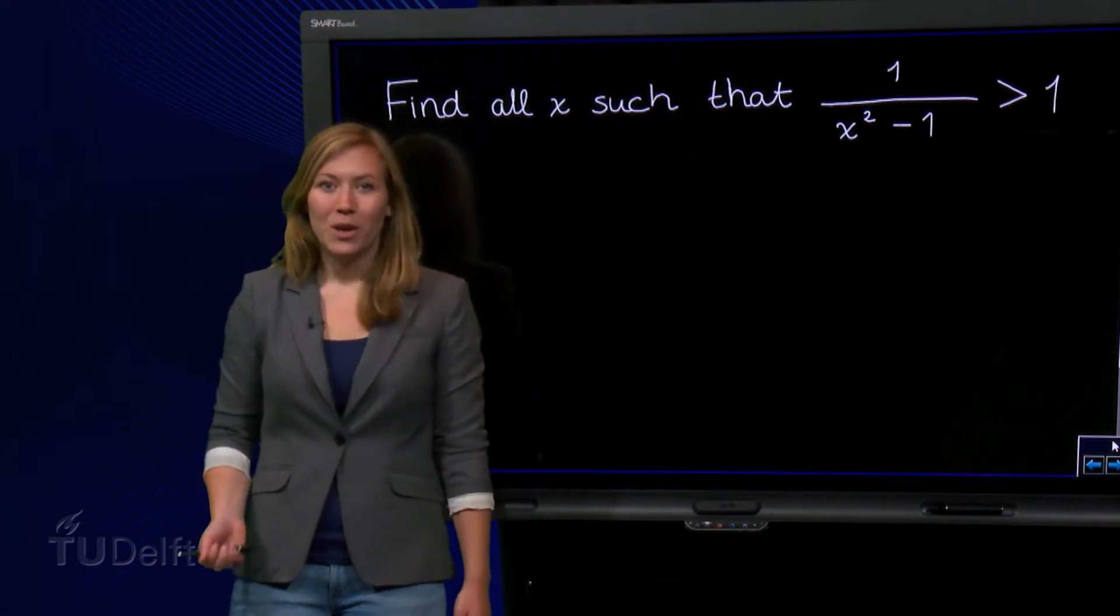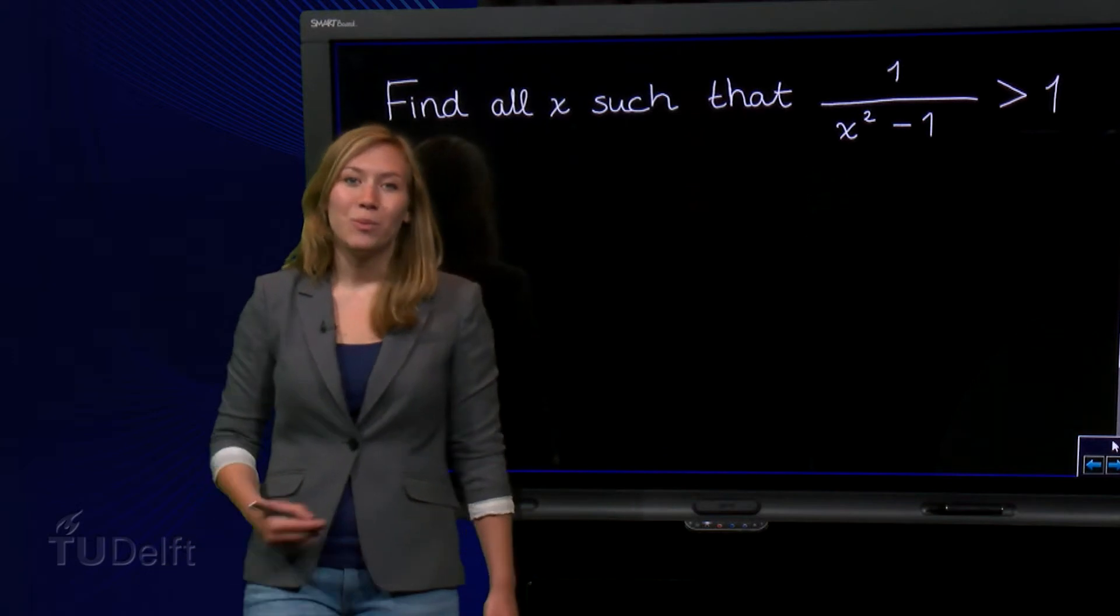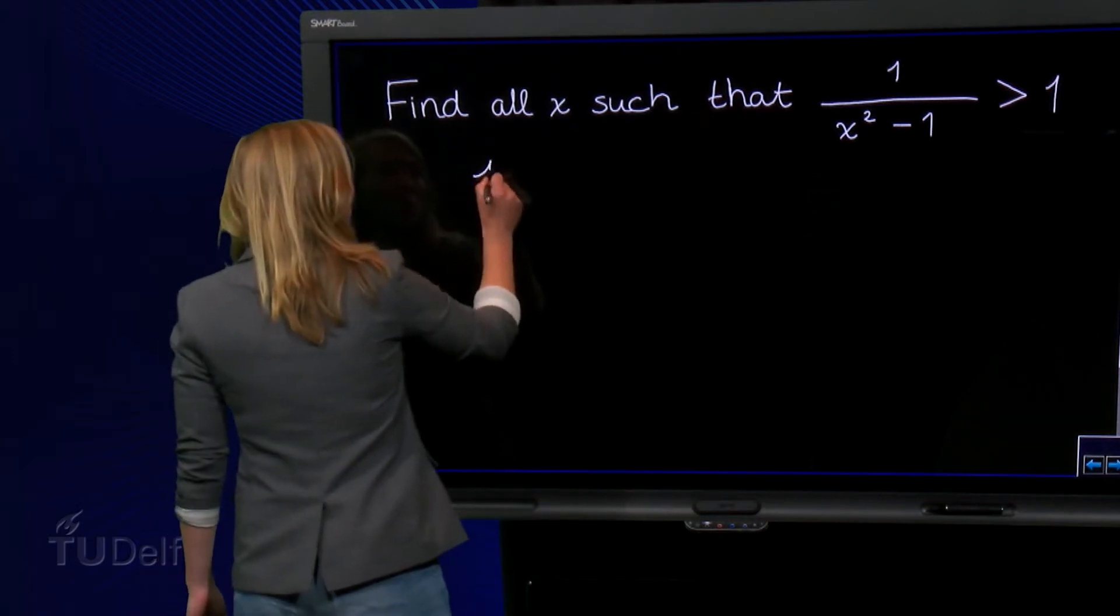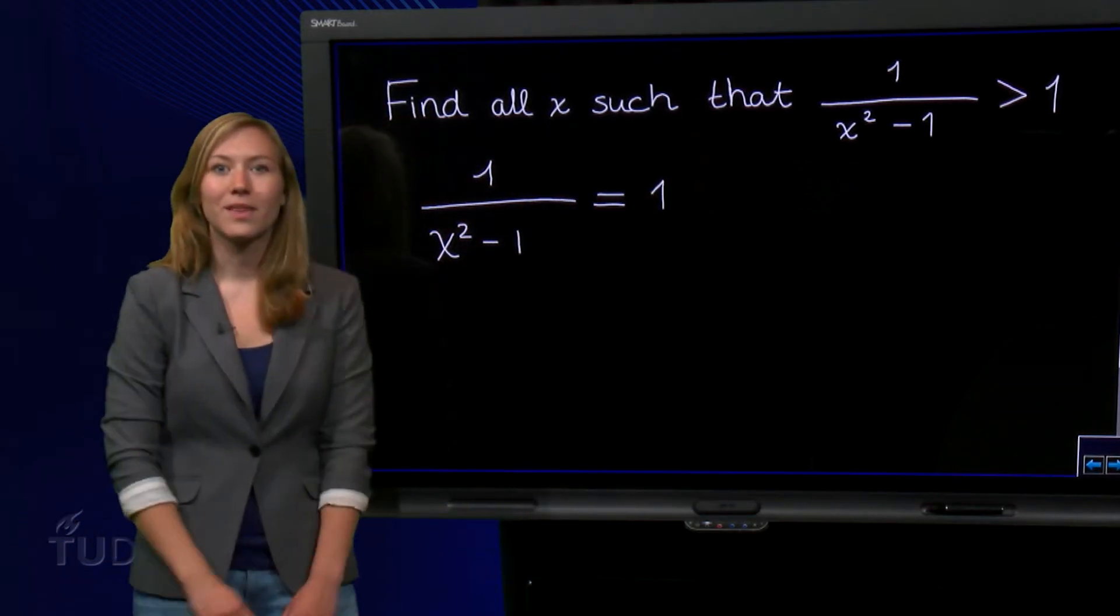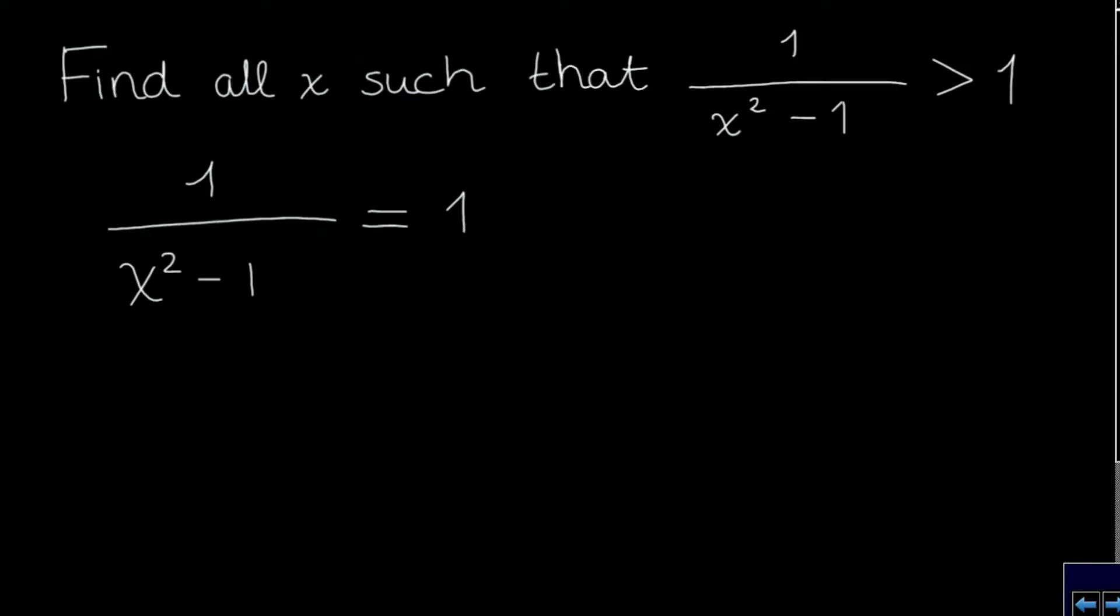To solve it, we first look where the left hand side and the right hand side are equal. 1 over x squared minus 1 is equal to 1. This we can easily solve. We multiply the left hand side and the right hand side by the denominator. Then we add 1 to both sides. So our solutions become x is the square root of 2 and x is minus the square root of 2.